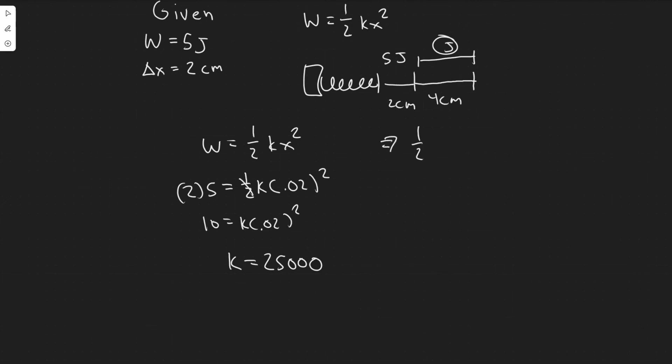So we're going to get one half times k, which we found was 25,000, because it's the same spring so they have the same spring constant, times x, which is 0.06 squared, because two plus four is six. That's how we're getting this.